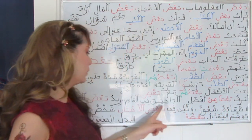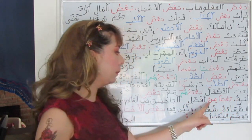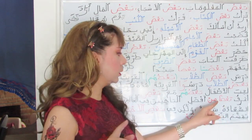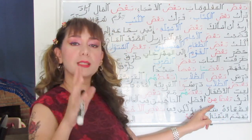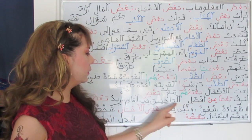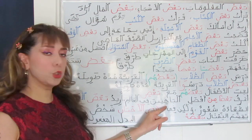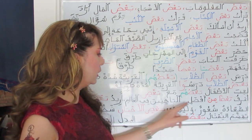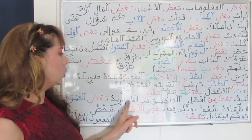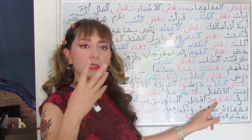A'rifu ba'dan min afdali al-bahithina fi al-'alam — I know some of the best researchers in the world. Ba'dan min — nunated ba'd followed by min — means 'some of.' These are in the genitive case because they are preceded by min. When you have the nunated ba'd with min, it means 'some of.'